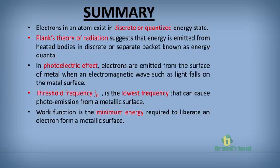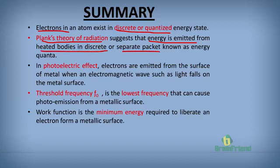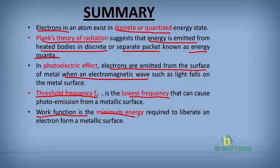In summary, in part one we have looked at the fact that electrons in an atom exist in discrete or quantized energy states. Planck's theory of radiation suggests that energy is emitted from heated bodies in discrete packets known as energy quanta. In the photoelectric effect, electrons are emitted from the surface of a metal when electromagnetic radiation such as light falls on it. We defined threshold frequency as the lowest frequency that can cause photoemission, and work function as the minimum energy required to liberate an electron from a metal surface.